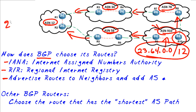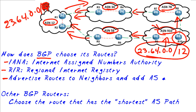Here's the challenge: let's say autonomous system 12 learns about the network 23.64 — it's learned it, but it's learned it from two sources, from two different paths. Should it go path A across here, or should it go path B across here? This is the point of this micro nugget — how does BGP choose the route to get to the 23.64 network, path A or path B?